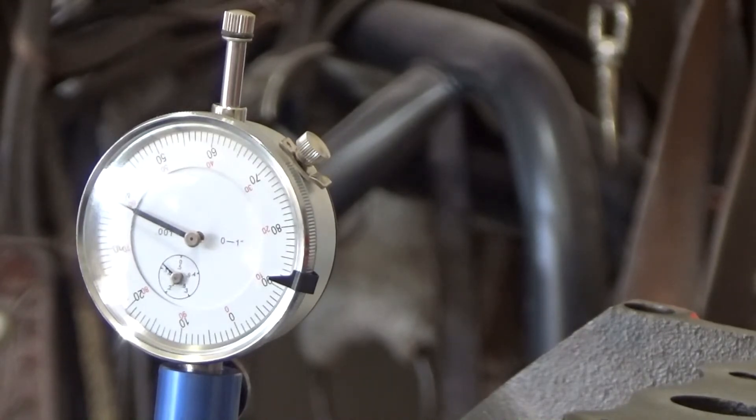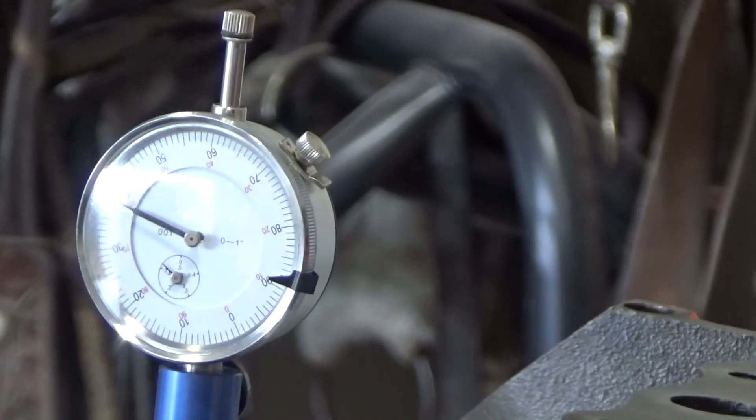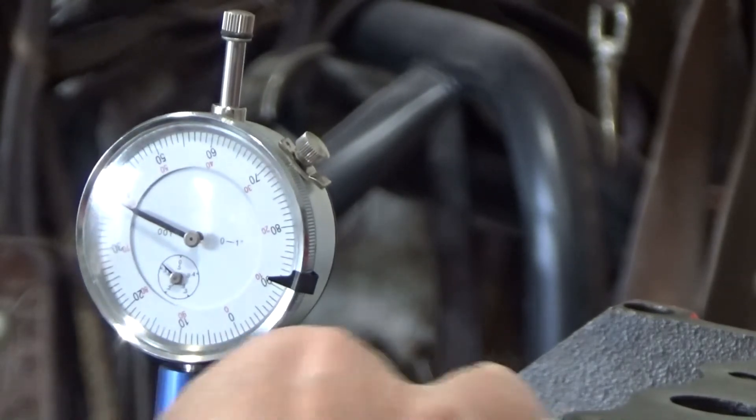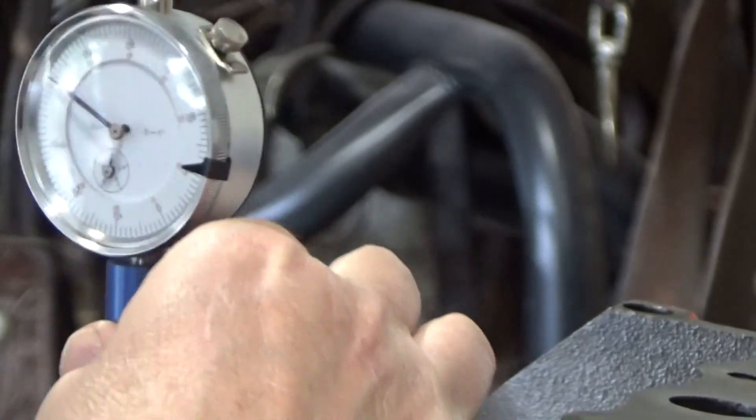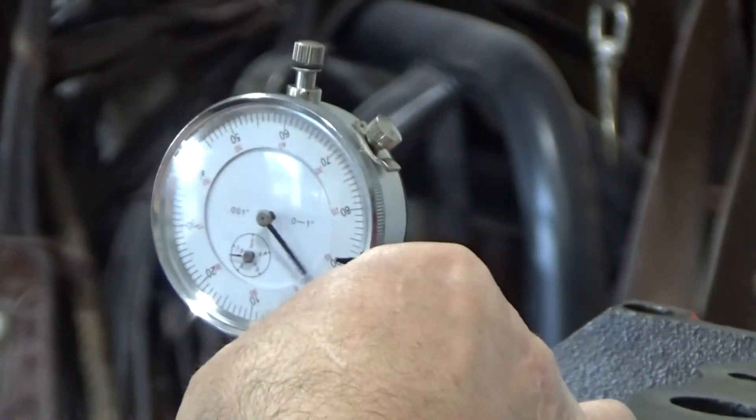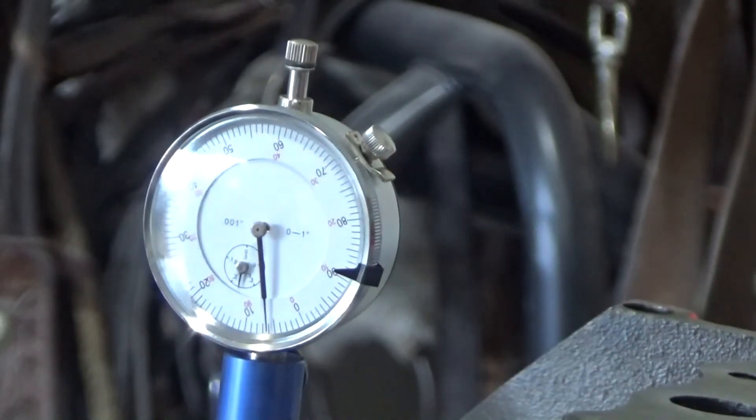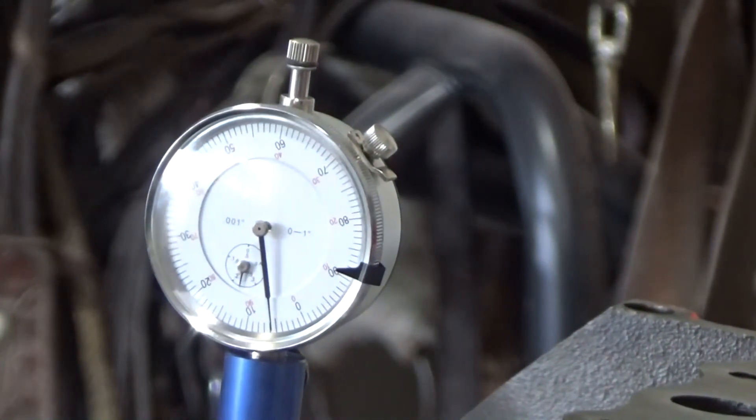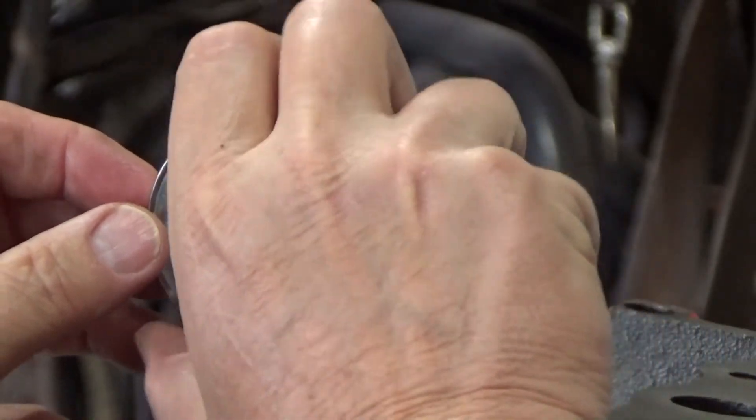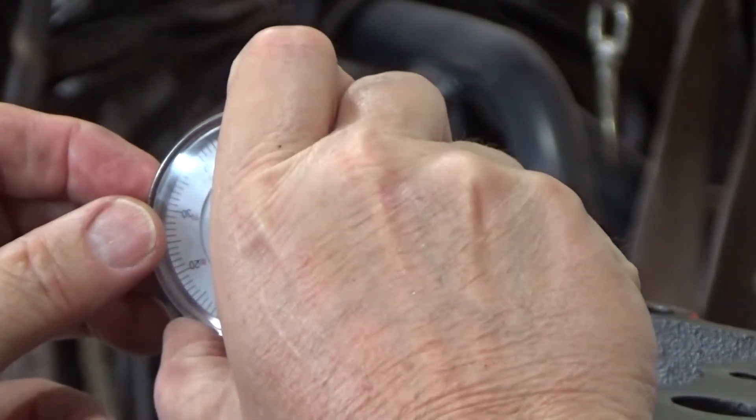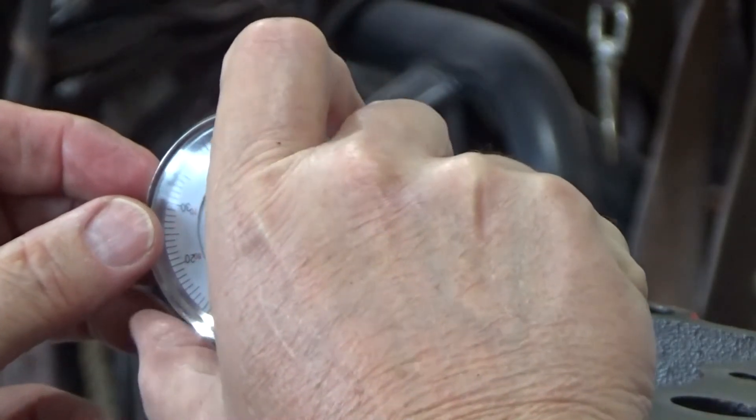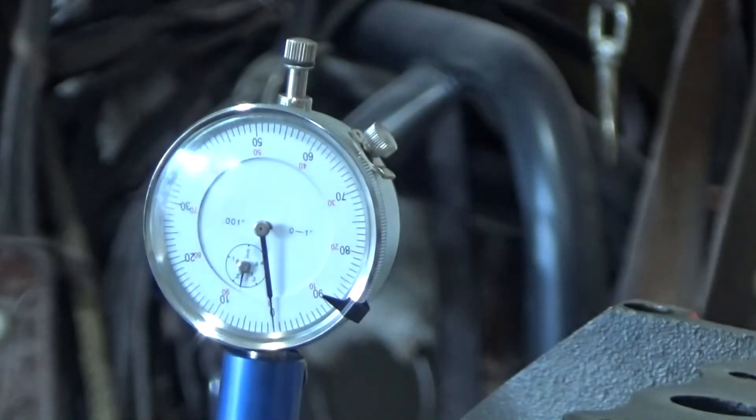Now I'm going to move the indicator to the intake lobe and check the same thing. Rotate it and make sure it's not moving. It's on the base circle.